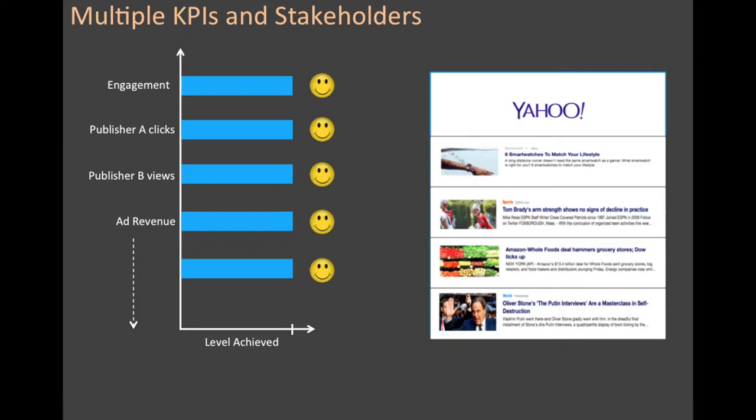You'll probably care about engagement, which is the amount of time your users spend clicking and dwelling on your content. You probably also care about revenue that you make from ads, but you might have other KPIs too. For instance, you might have a publishing partner and care about how many clicks you're going to deliver to that publishing partner, or maybe the number of premium views you deliver to another publishing partner, and so on.